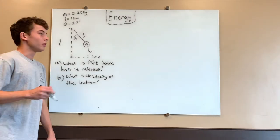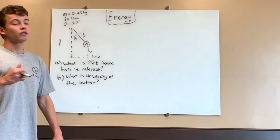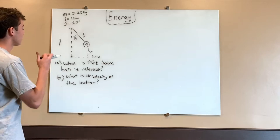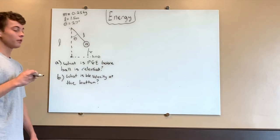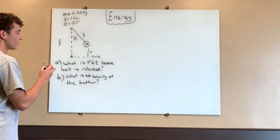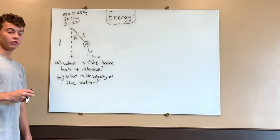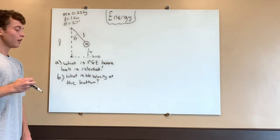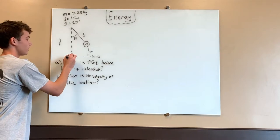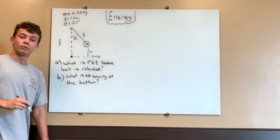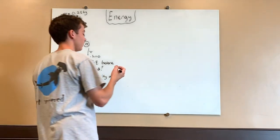Alright, so for this video we're going to be looking at energy conservation. The problem here is a basic pendulum and we're asked to find the gravitational potential energy before the ball is released, as well as the velocity at the bottom of its path. So let's start out with part A.